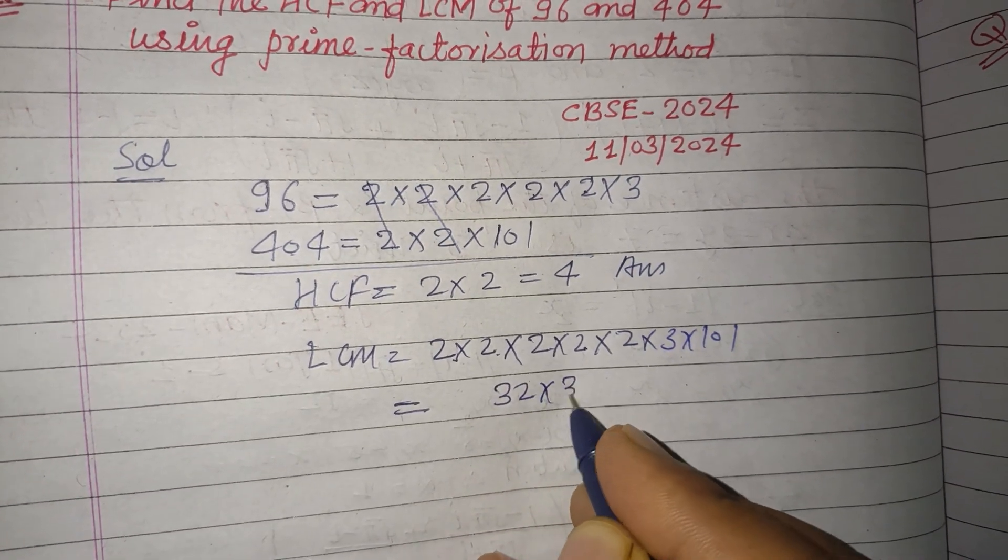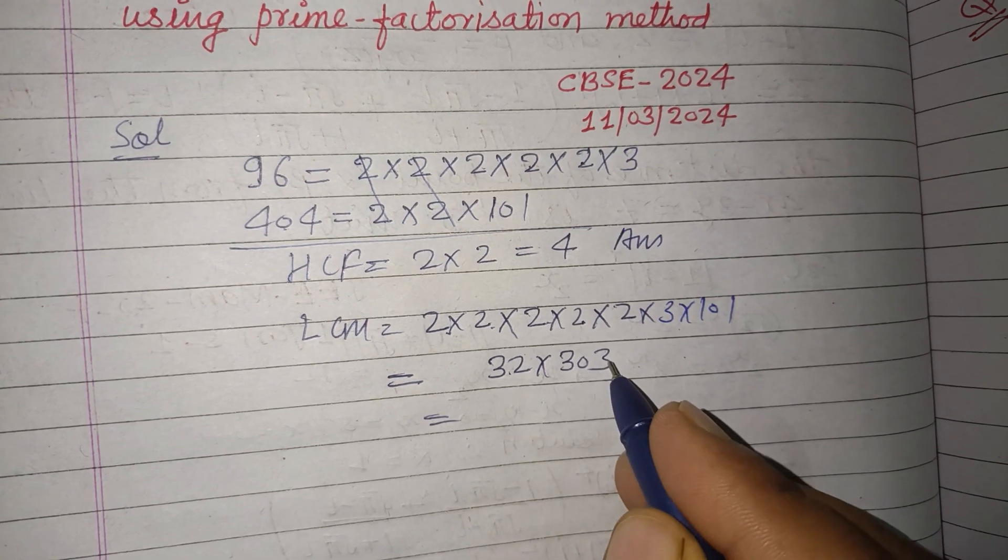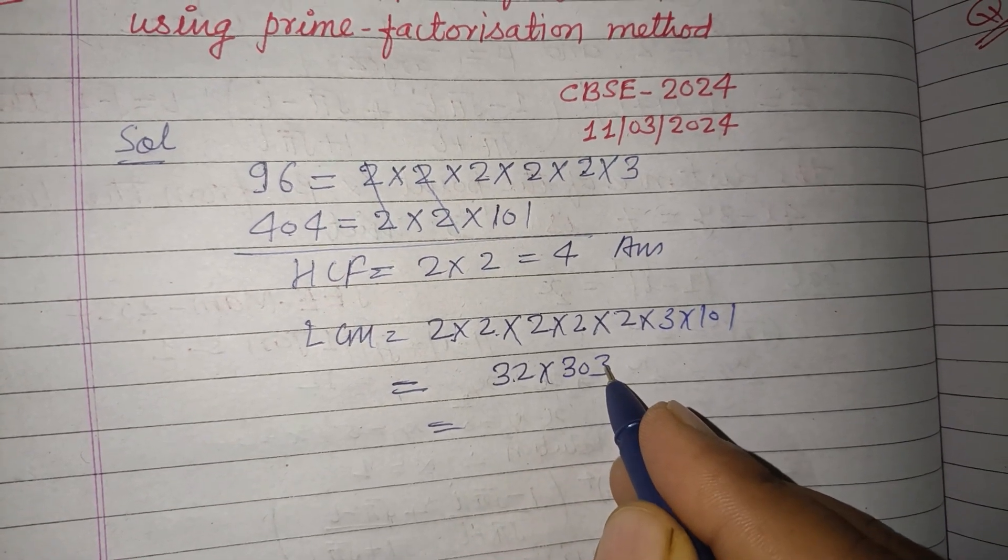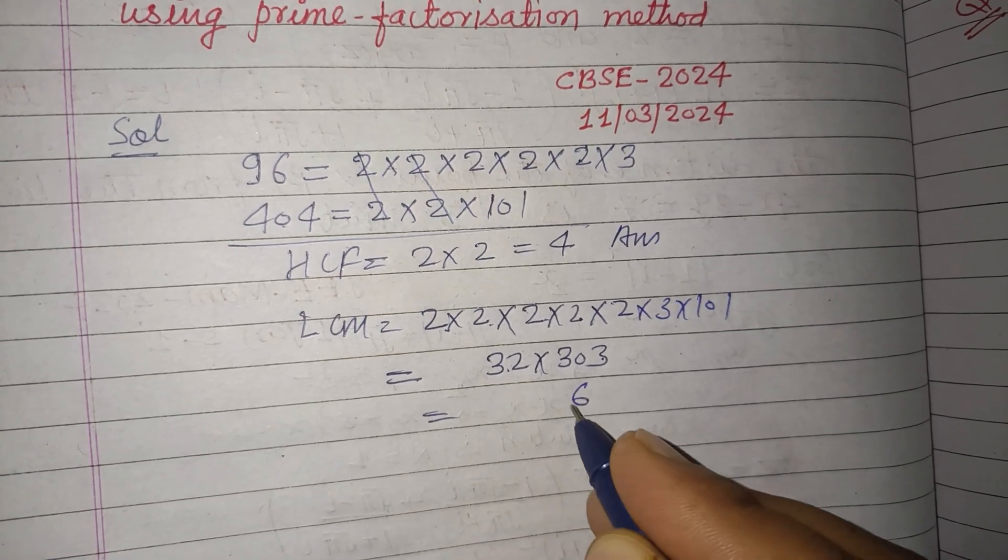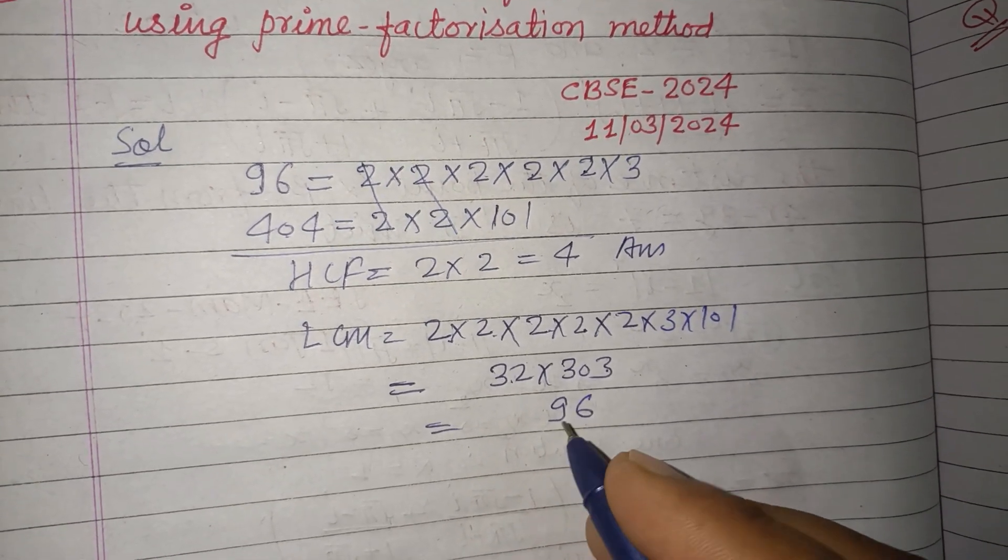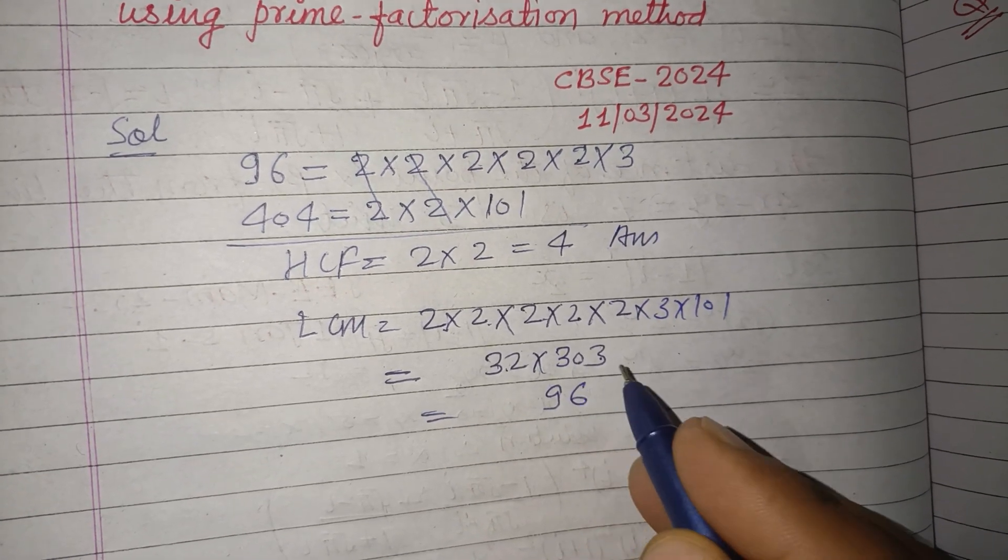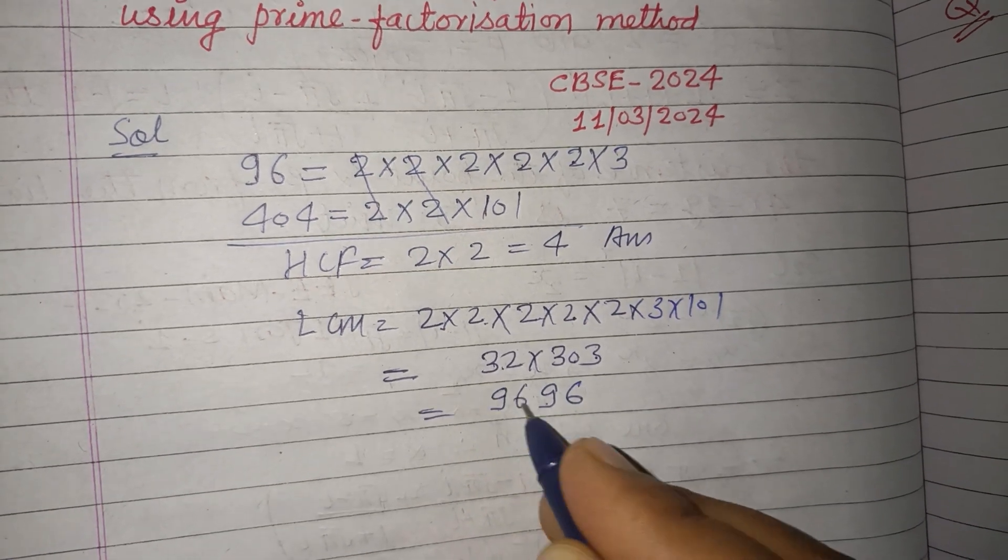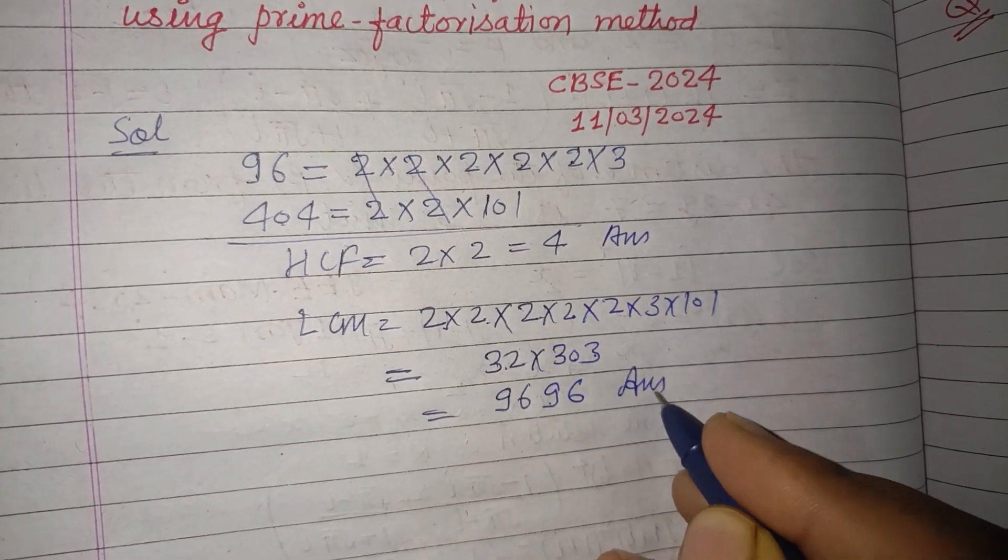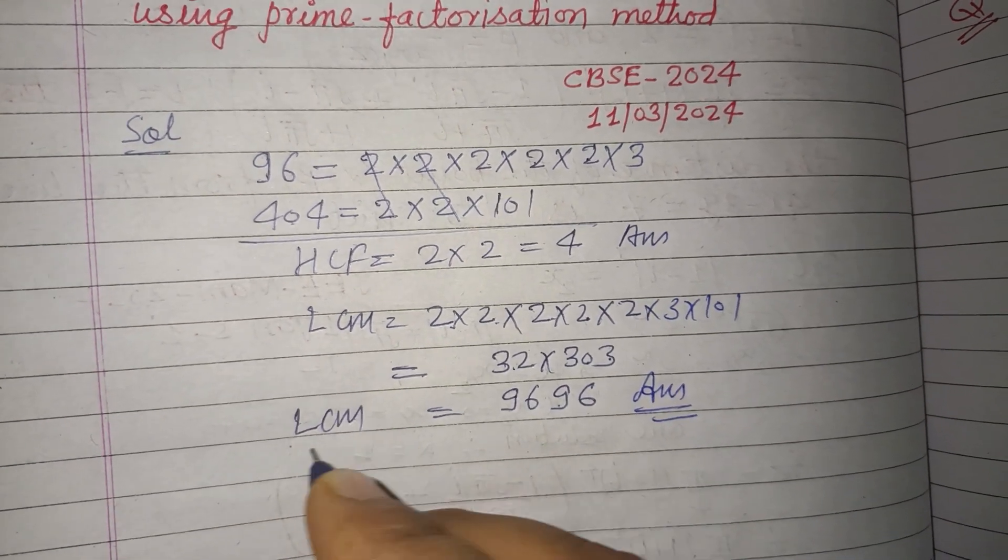32 times 3 is 96. When we multiply 32 by 303, we get 9696. So 9696 is the LCM of these two numbers.